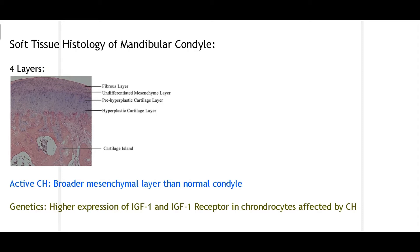Now let's move on to the soft tissue histology of the mandibular condyle. When we talk about the histology of the condyle there are basically five layers: the fibrous layer, the undifferentiated mesenchyme layer, the pre-hypertrophic cartilage layer, the hypertrophic cartilage layer, and cartilage islands. This is the normal histology of the mandibular condyle. In active condylar hyperplasia, the mesenchyme layer becomes much broader compared to the normal condyle — this is a very important finding.